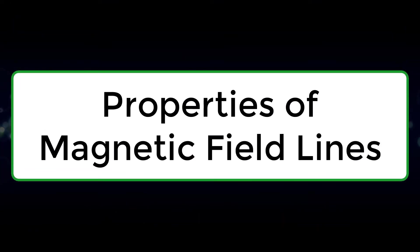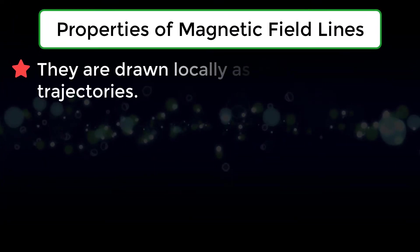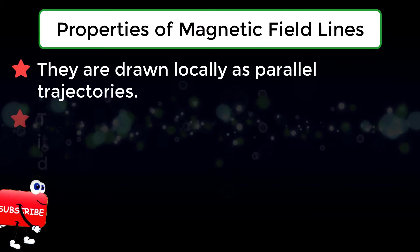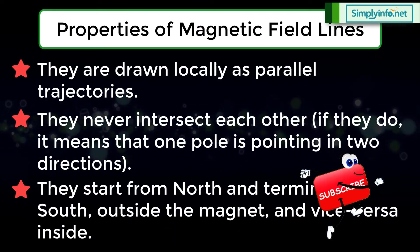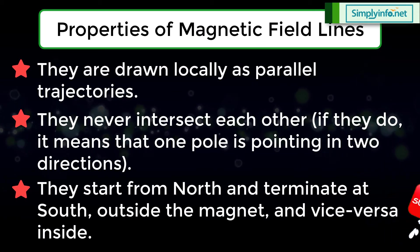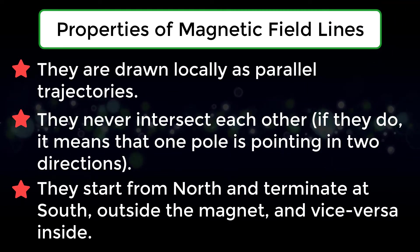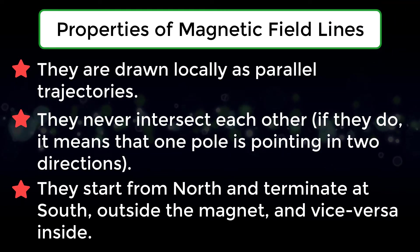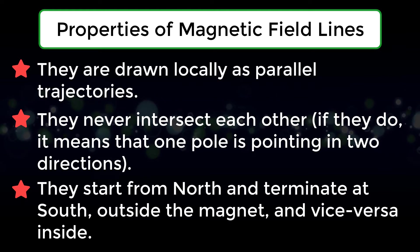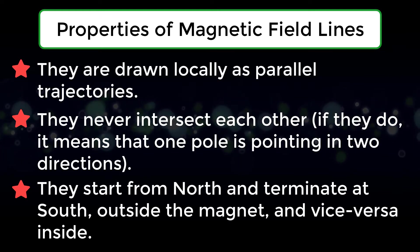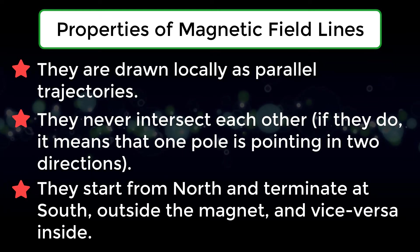Properties of magnetic field lines: They are drawn logically as parallel trajectories. They never intersect each other — if they do, it means that one pole is pointing in two directions. They start from north and terminate at south outside the magnet, and vice versa inside the magnet.